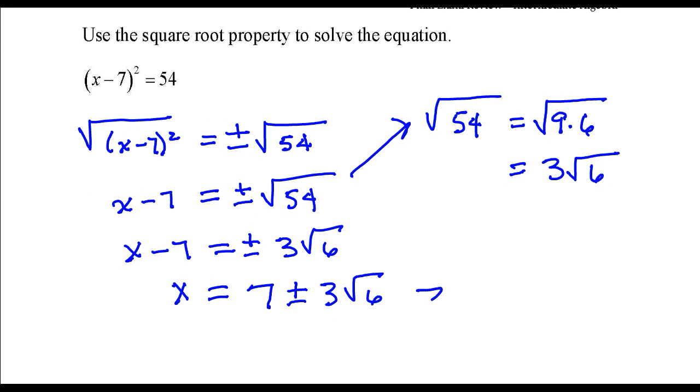So the answer here is 7 plus 3 square root of 6, comma 7 minus 3 square root of 6, and that's it.